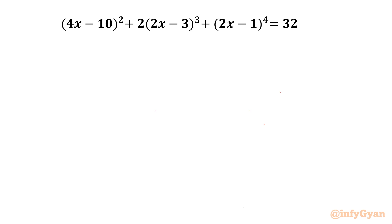Welcome back to Infigyan friends. Today in this video we are going to take up one very interesting and tricky equation. The equation is (4x - 10)² + 2(2x - 3)³ + (2x - 1)⁴ = 32. We have to find out 4 solutions. So let us get started by considering the first bracket itself.